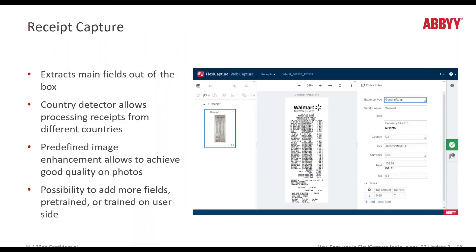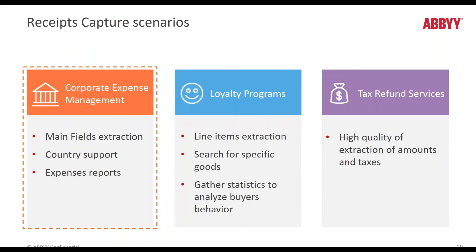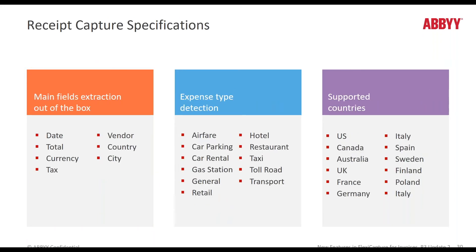Our receipt capture solution extracts main fields out-of-the-box. It also has country detection capabilities, predefined image enhancement, and the option to add more fields — whether trained or not — from the user's side. Key receipt capture scenarios include corporate expense management, loyalty programs, and tax refund services. The main fields extracted out-of-the-box include expense types that are detected, and the full list of supported countries is shown on screen.